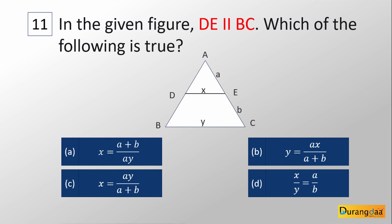Question number 11: In the given figure, DE is parallel to BC. Which of the following is true? Option A: x = (a+b)/a · y. Option B: y = ax/(a+b). Option C: x = ay/(a+b). Option D: x/y = a/b.